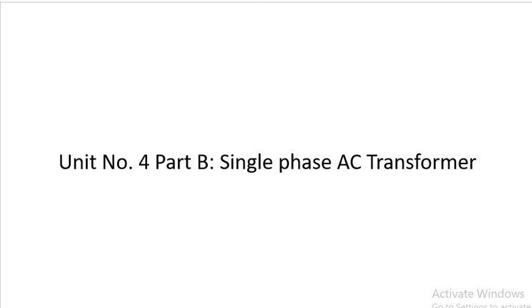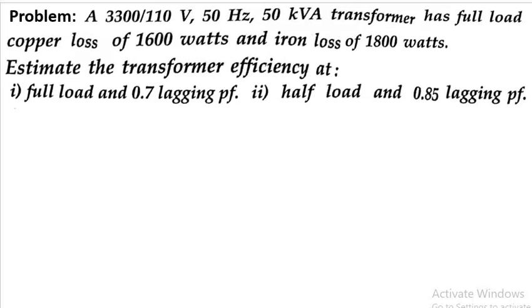A 3300 by 110 volt, 50 Hz, 50 kVA transformer has full load copper loss of 1600 watts and iron loss of 1800 watts. Estimate the transformer efficiency at: (i) full load and 0.7 lagging power factor, and (ii) half load at 0.85 lagging power factor.